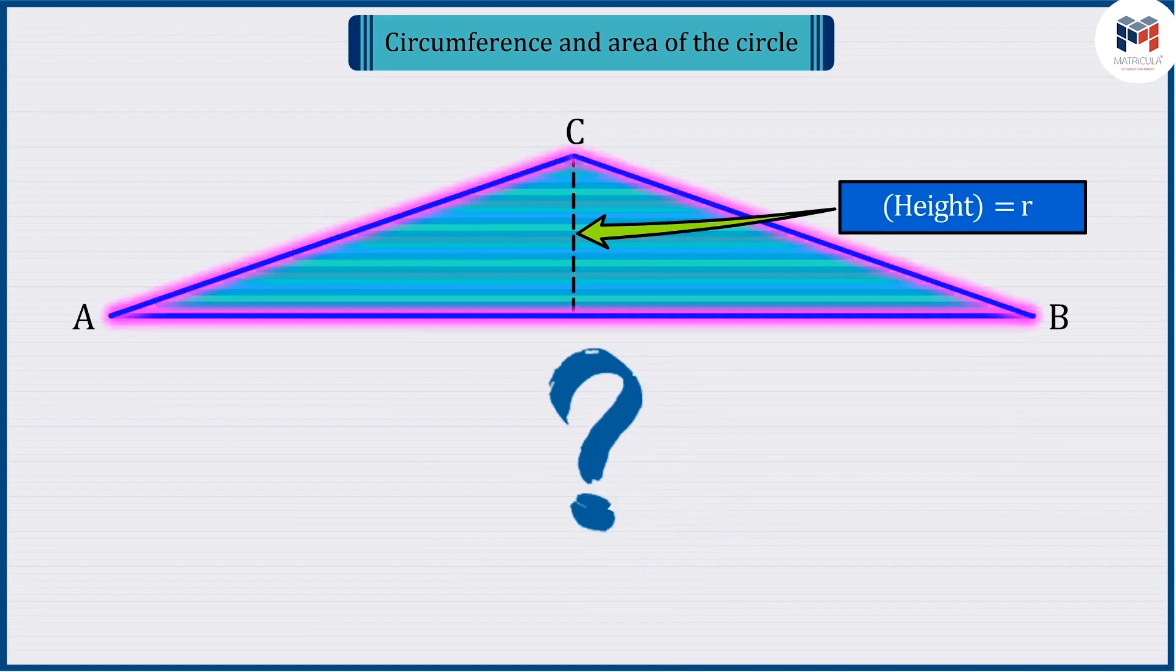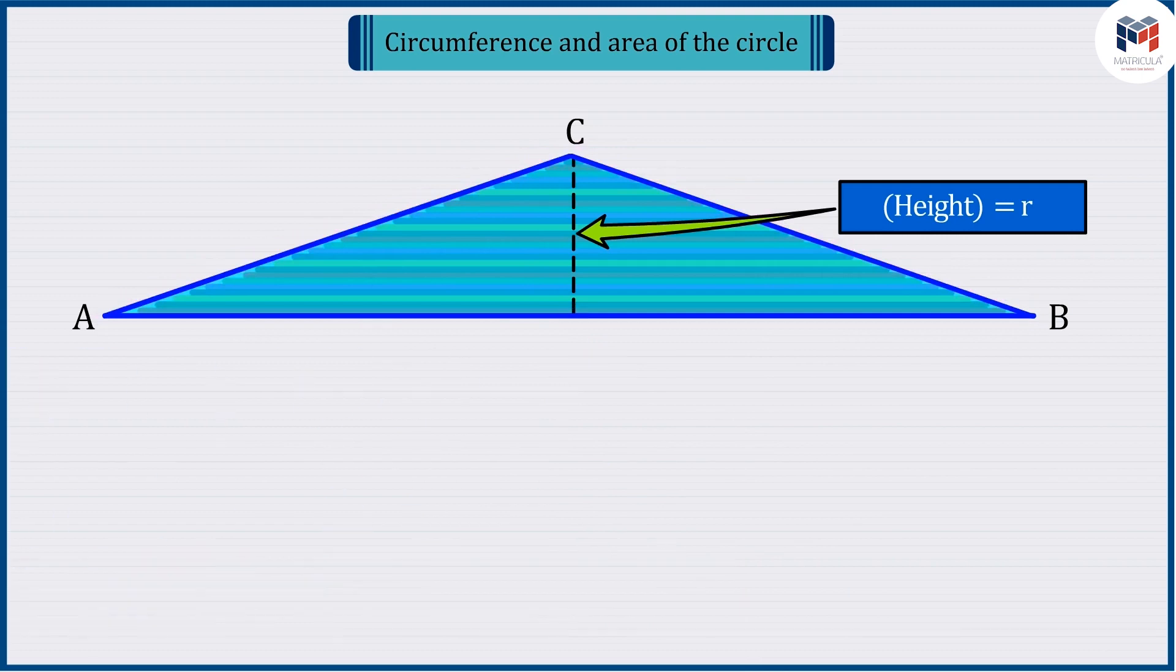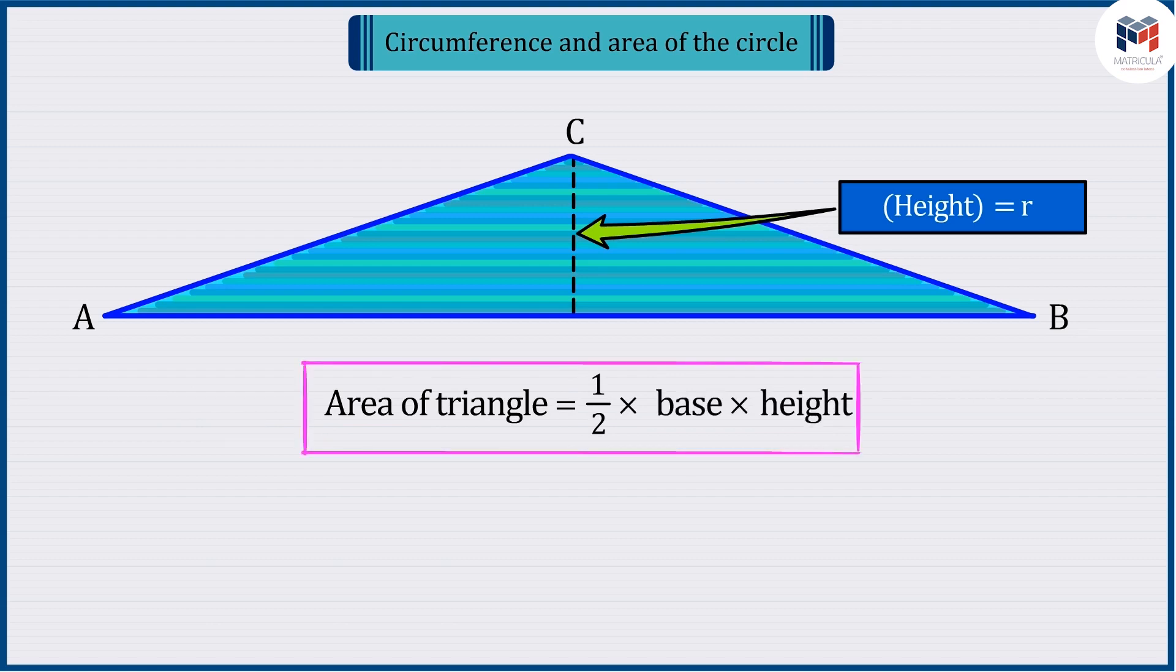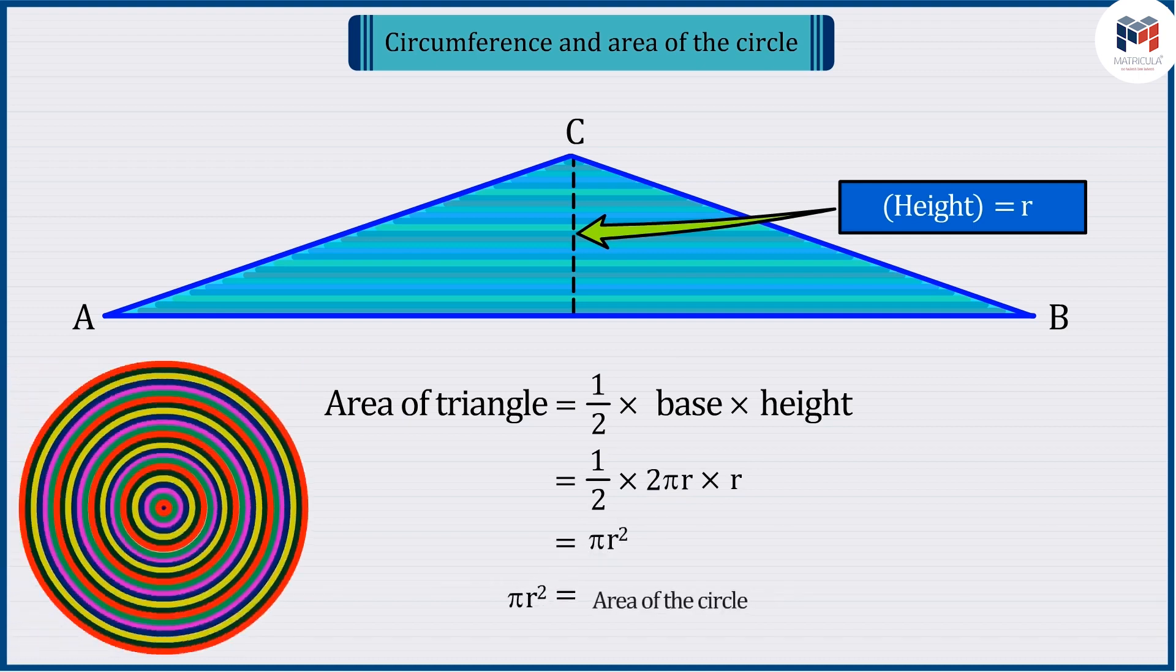So, can you tell how we can find the area of this triangular shape? Well done. Since we know that the area of a triangle is 1 upon 2 multiplied by the base multiplied by the height, therefore, in the area formula on putting the value of base and height of this triangle and solving, we have the area of the triangle pi r raised to the power 2 which will be equal to the area of the circle.